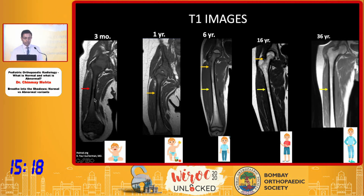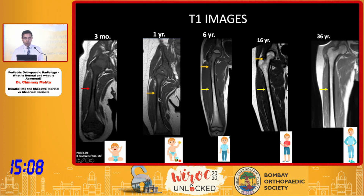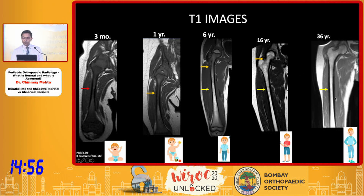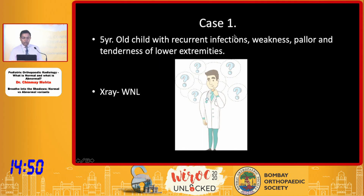In the first image we see that this is entirely isointense or slightly brighter than the adjacent muscle — that's the red marrow. As the child grows into infancy, we see it is slowly being replaced with fatty tissue. Fatty marrow becomes even brighter or hyperintense on T1 images at around six to ten years of age. At adult age it is completely white — the fat marrow has replaced the red marrow entirely.